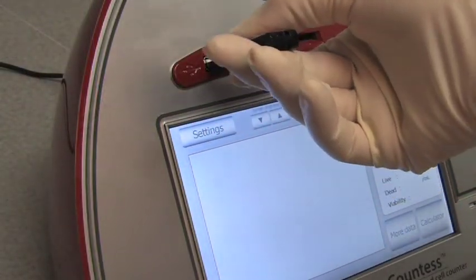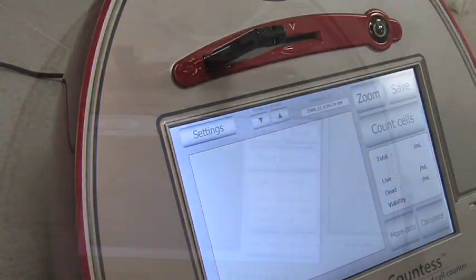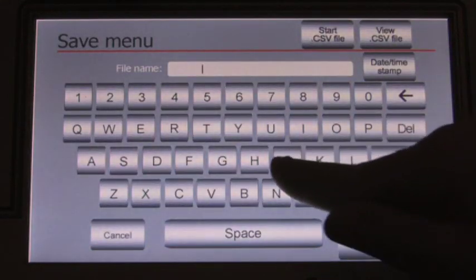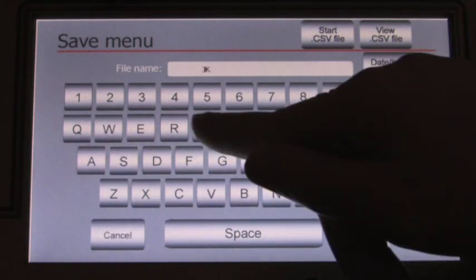To save your data, insert a USB drive into the USB port on the front of the instrument, then press save. Name your data set using the touchscreen keyboard, the date and timestamp button, or both.